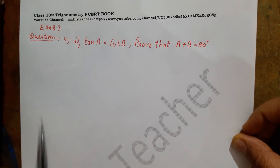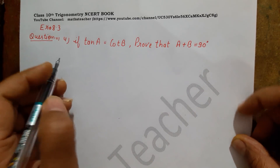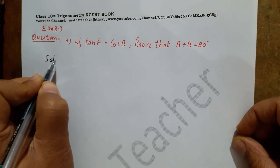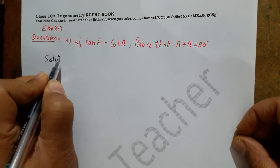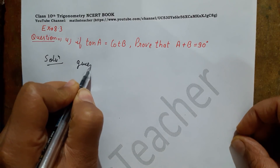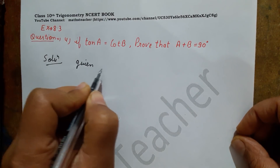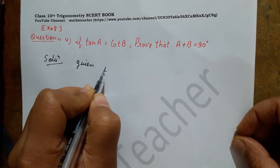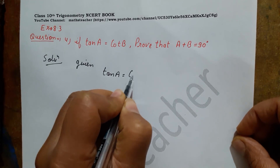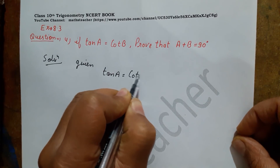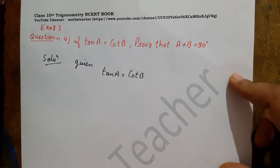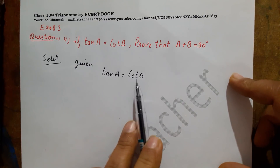From that, our question will be proved. So the first step — Solution. Given: tan A equals cot B. We have to change one side using the complementary angle identity.